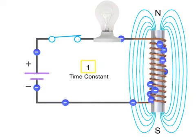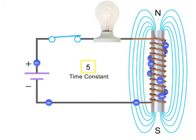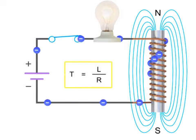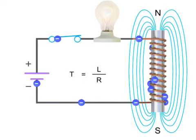The current will continue to flow and reach its maximum value after 5 time constants, or 5T, where T is equal to L divided by R. The light bulb will then be at its maximum brightness.